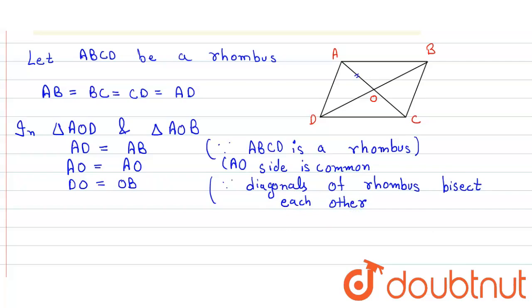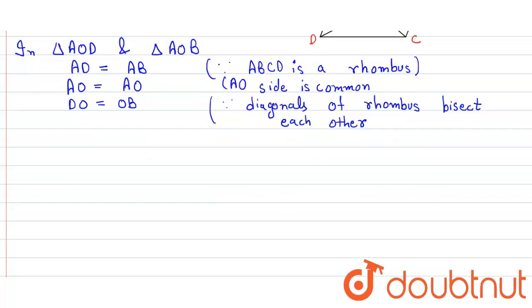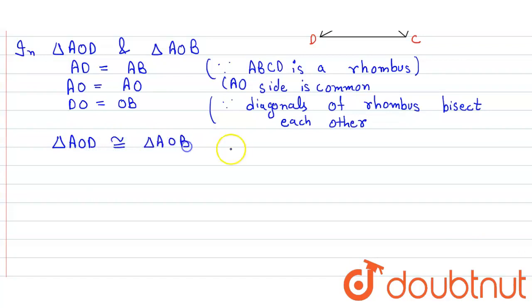Using the SSS congruency rule — all sides equal — we can say that triangle AOD is congruent to triangle AOB, by SSS.